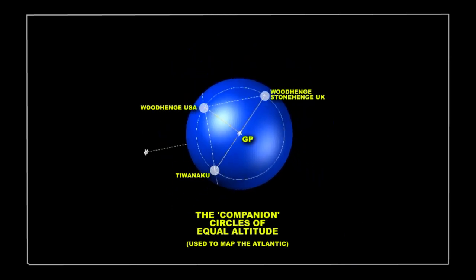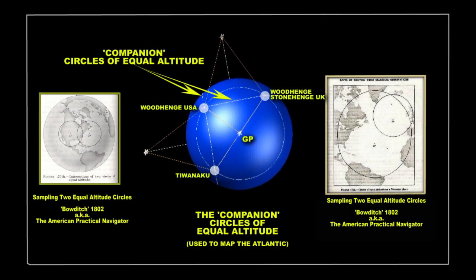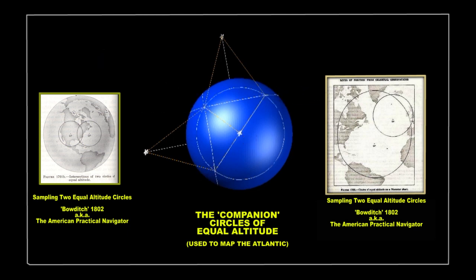However, to further aid in the angular mapping process, other companion circles of equal altitude, which in this particular case are ingeniously incorporated into the parent baseline as geometrical equals.